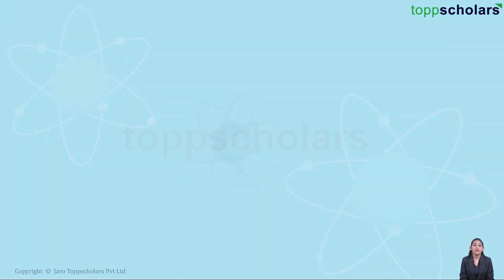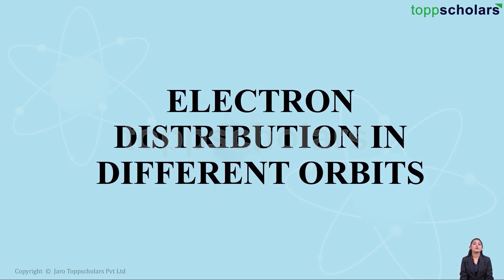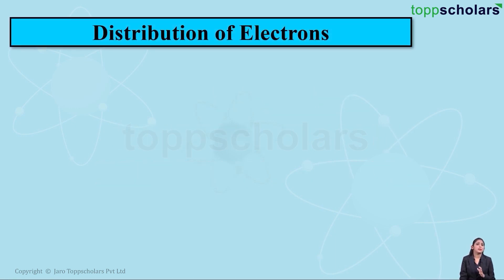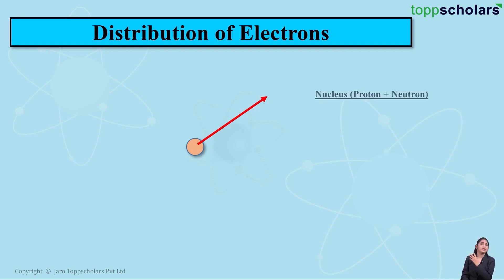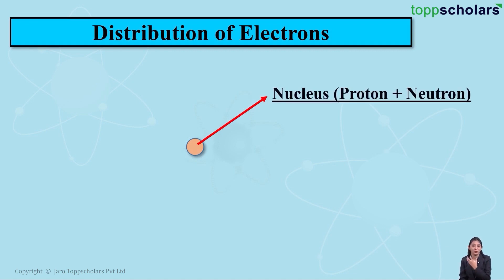Hello dear students, welcome to Top Scholars. Today we'll be discussing electron distribution in different orbits. The first question is: how are electrons distributed? If I talk about the structure of an atom, the atom consists of a centrally positively charged nucleus, which consists of protons and neutrons. Protons are positively charged and neutrons are neutral, meaning they do not have any charge.